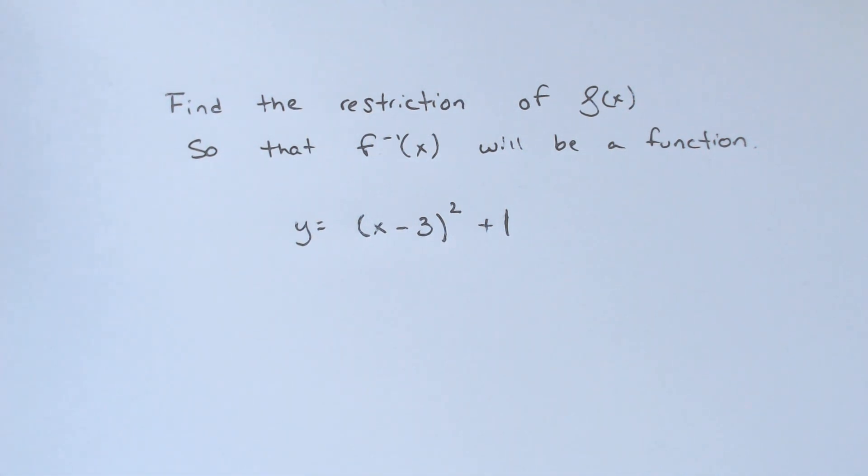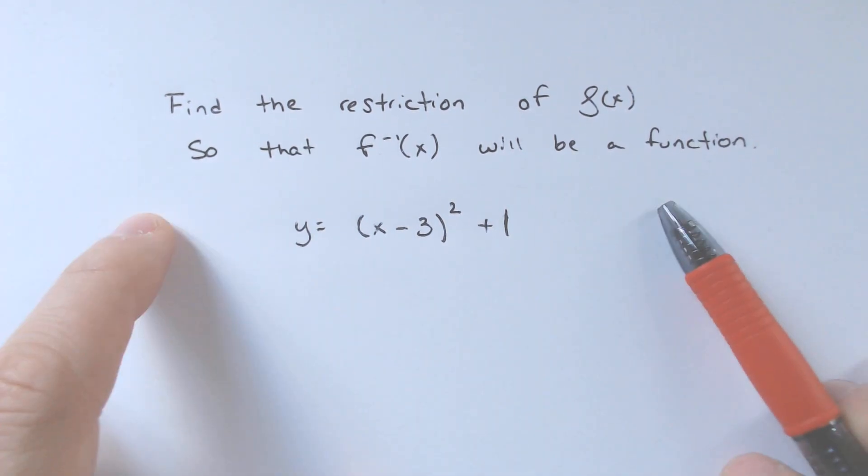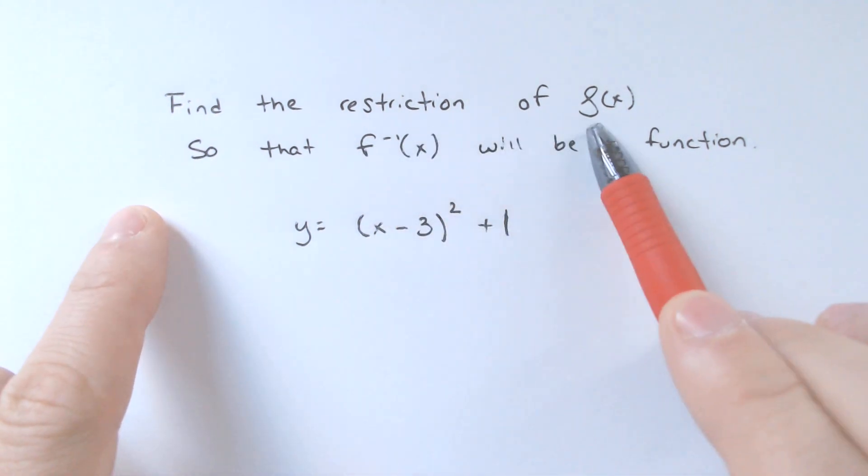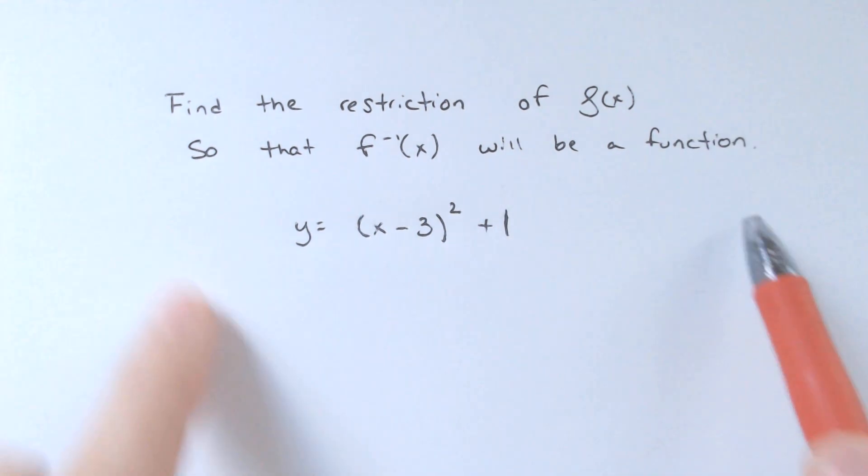Hello and welcome back to another episode of Math with Sohn. Today we're going to be finding the restrictions of the original function f of x so that the inverse will continue to be a function.